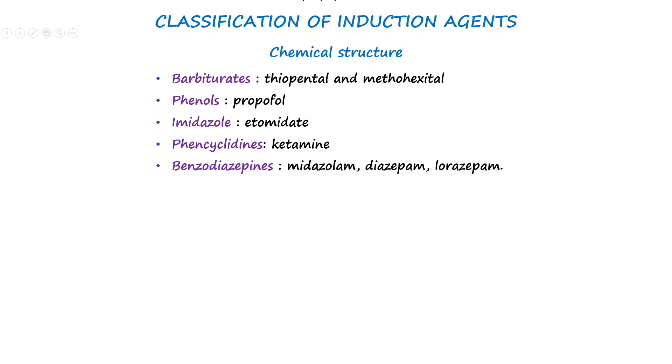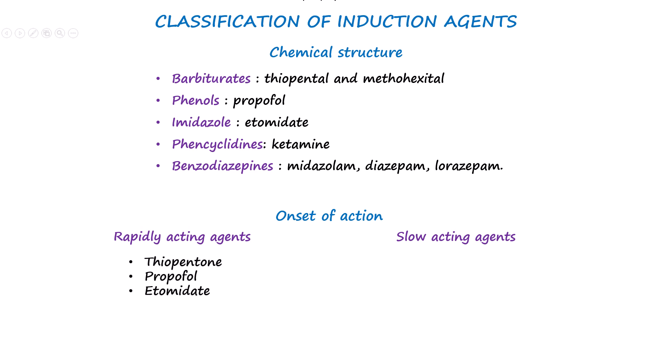They can also be classified based on onset of action into rapidly acting and slow-acting agents. A rapidly acting agent induces unconsciousness within one arm-brain circulation time and includes thiopentone, propofol, and etomidate. In contrast, slow-acting agents, which take longer than one arm-brain circulation time, include ketamine and midazolam.